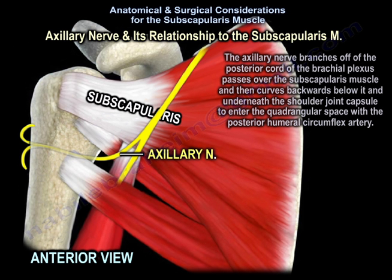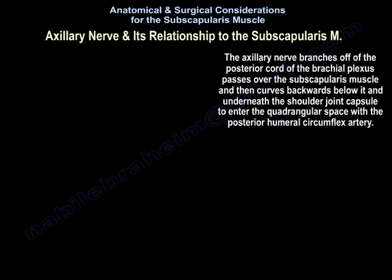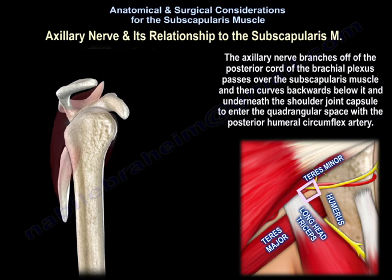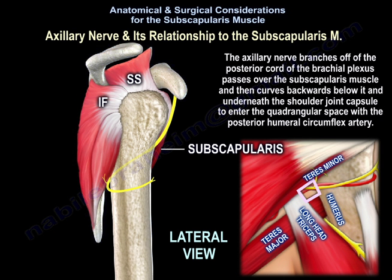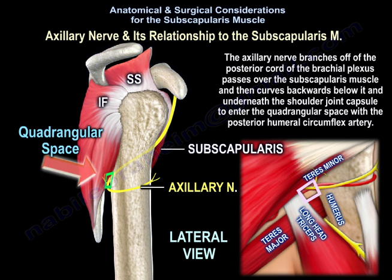The axillary nerve and its relationship to the subscapularis: The axillary nerve branches off the posterior cord and passes over the subscapularis muscle, then curves backwards below it and underneath the shoulder joint capsule to enter the quadrangular space with the posterior humeral circumflex artery.